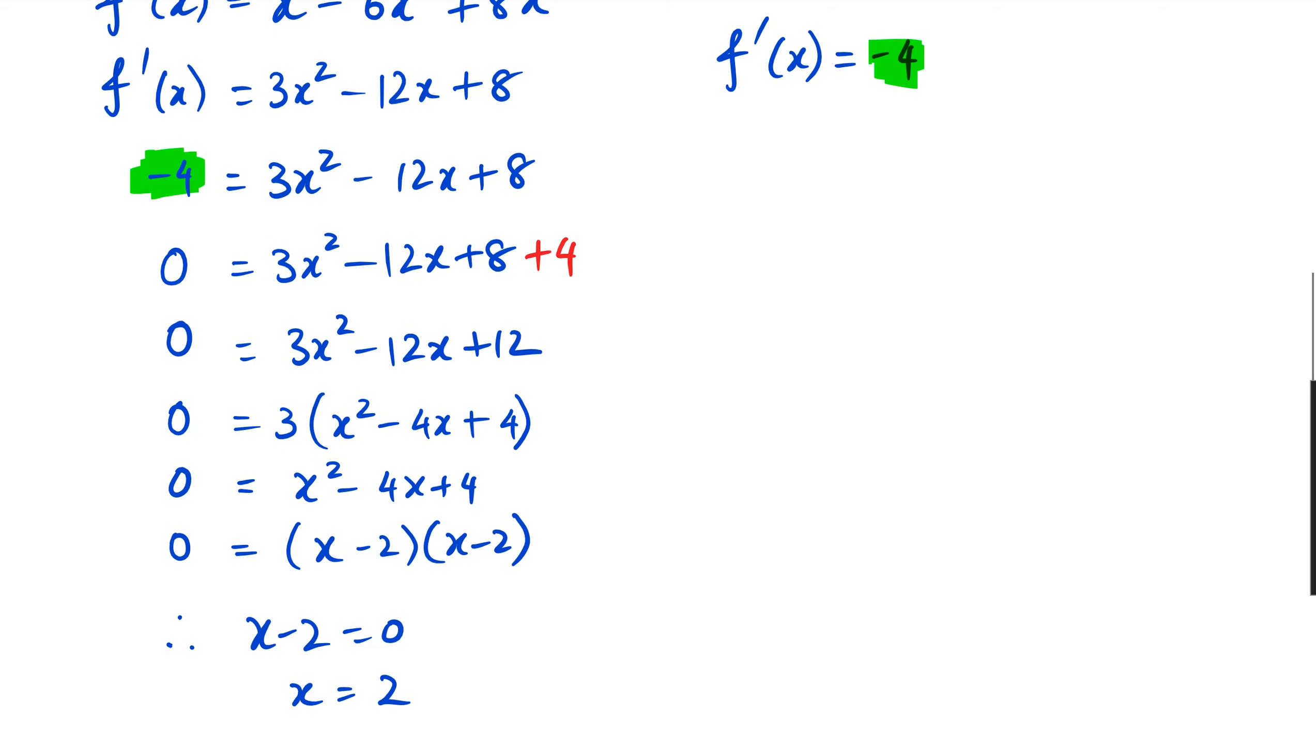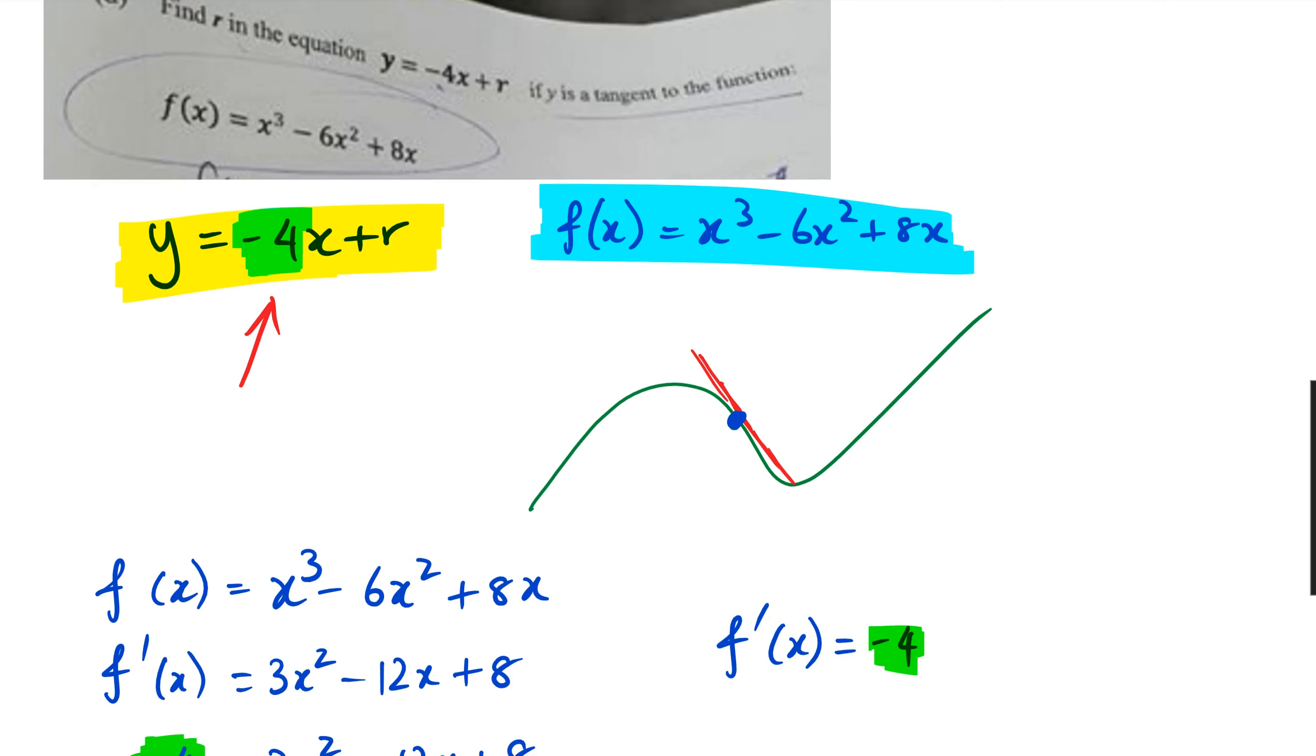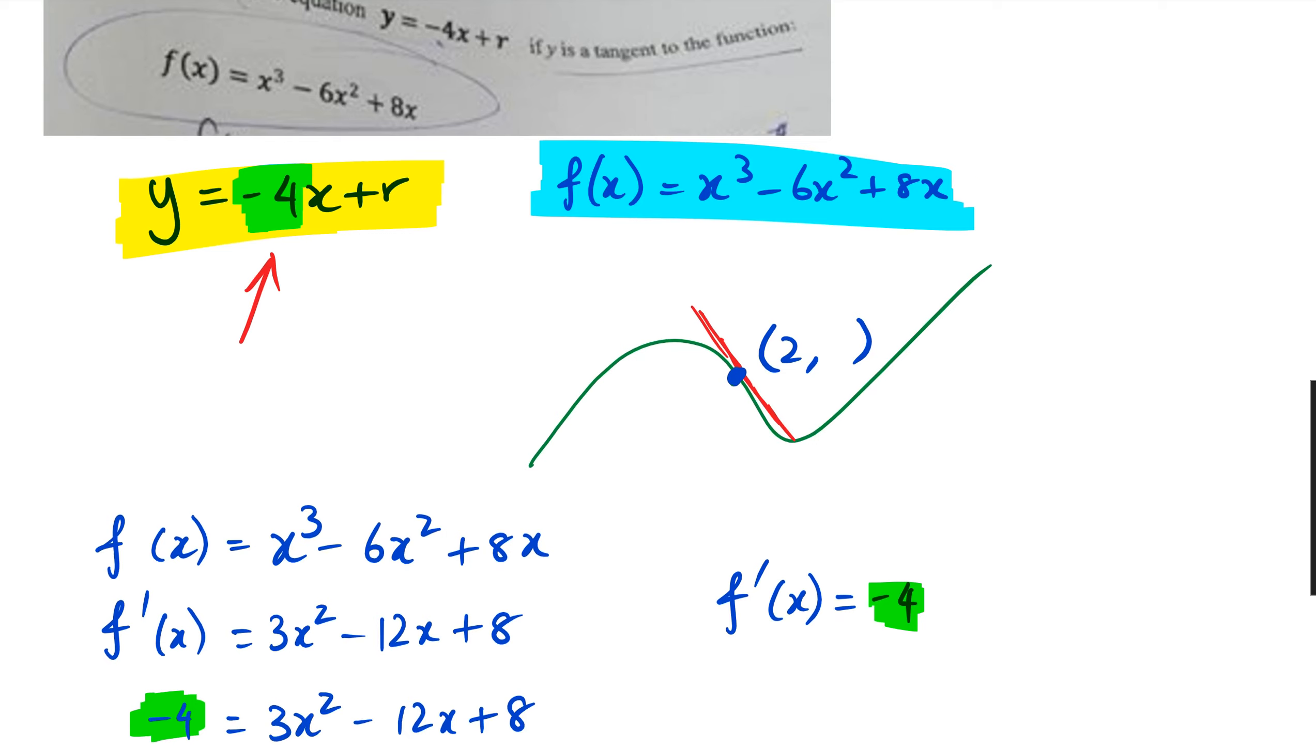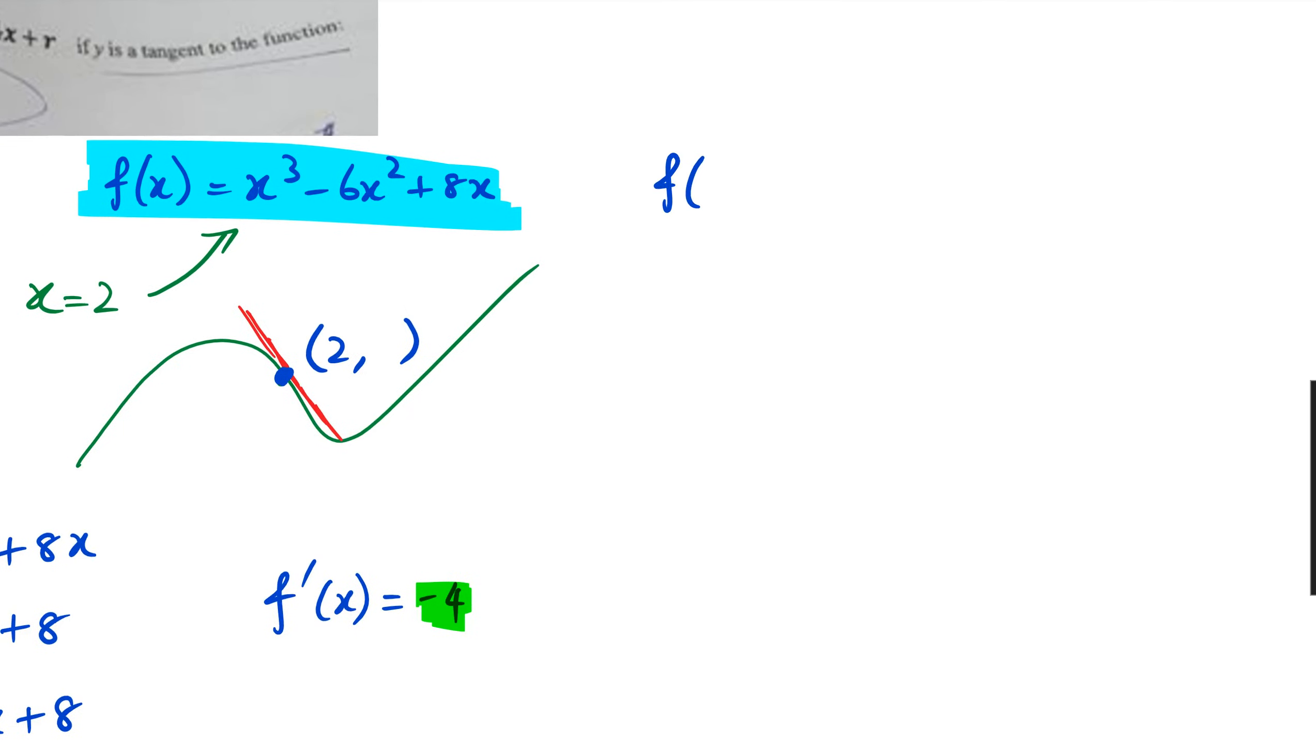So what I've discovered here is that x = 2. I have figured out what this blue point's x-coordinate is, and that is 2. So I actually need to go back and figure out the y value for that blue point. To figure out the y value, I simply substitute x = 2 into this equation. I want to work out what f(2) is. I'm going to get 2³ - 6(2²) + 8(2), which is 8 - 24 + 16 = 0. So this point is (2, 0).